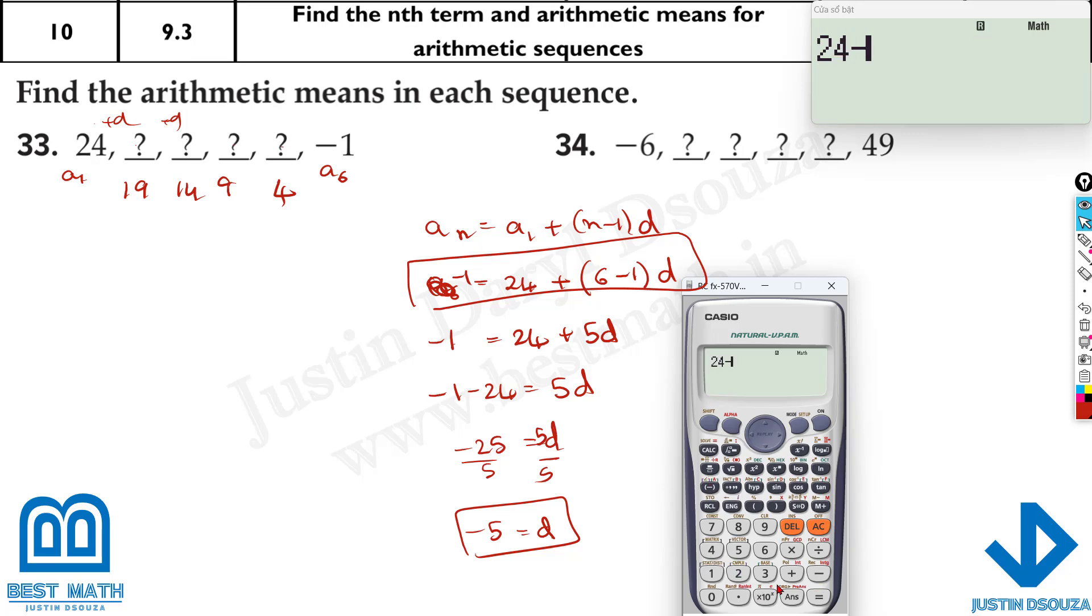So what I do is 24 minus 5. What's that? Answer is 19. Now I'll just take that as the next term. Answer minus 5, because I know all the answers subtracted by the d value is minus 5. It's 14, 9, 4, and minus 1. We'll stop over there.